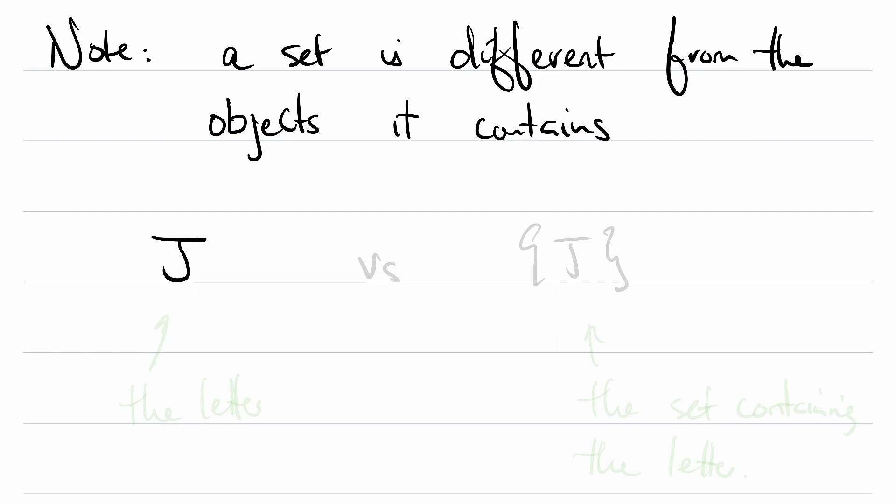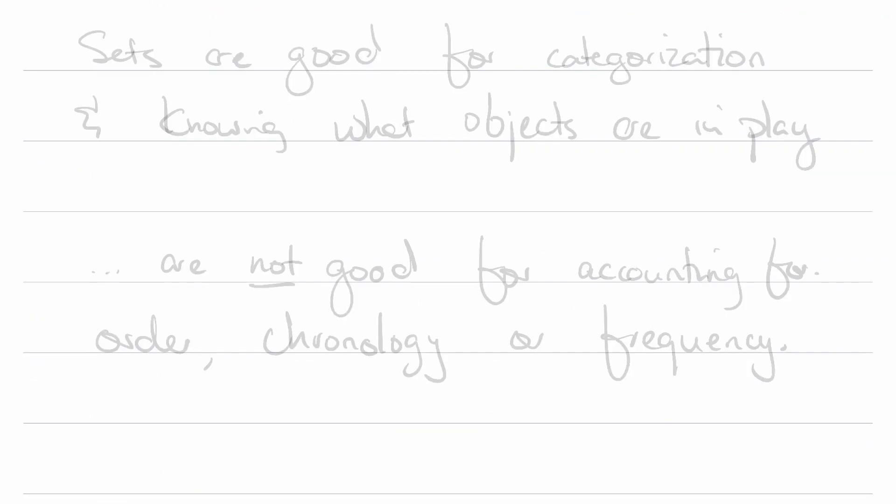Think of the object j versus this set over here. Here we have the letter, here we have the letter, and this is the set containing the letter. These are not the same thing.